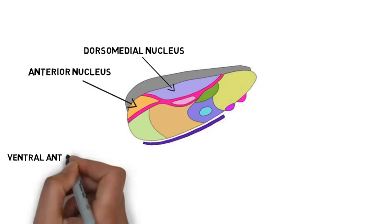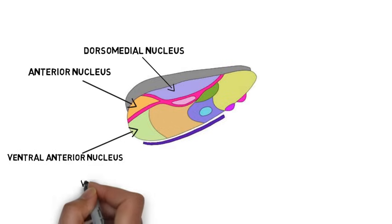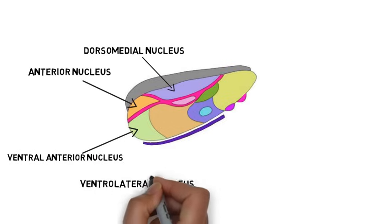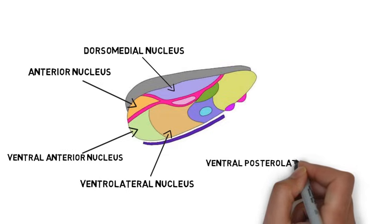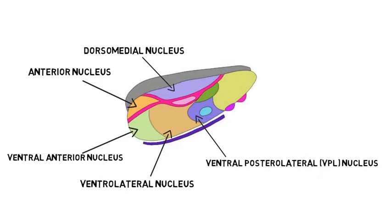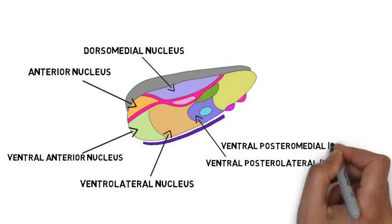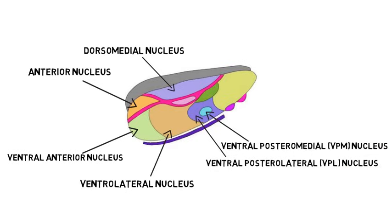The ventral anterior nucleus and ventrolateral nucleus are thought to be involved in motor functions. The ventral posterior lateral nucleus, or VPL, and the ventral posterior medial nucleus, or VPM, both act as relay nuclei for sending somatosensory information to the somatosensory cortex.